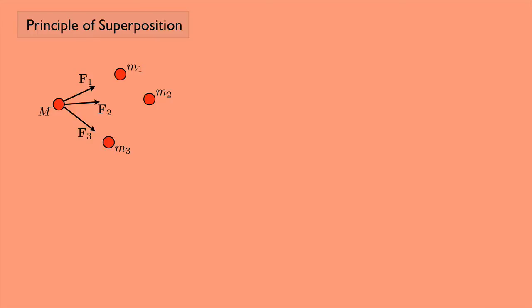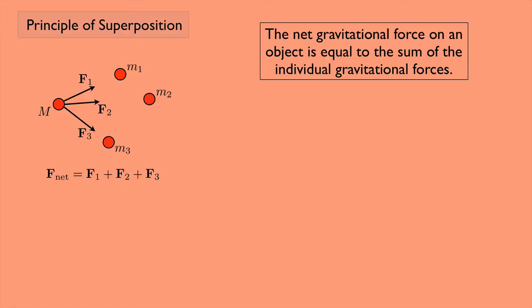Well, it turns out you just add them up. The net force — that's the sum of all the forces — is just F1 plus F2 plus F3. So the net gravitational force on an object is equal to the sum of the individual gravitational forces. That would mean F net equals F1 plus F2 plus F3, all the way up to Fn if we have n different objects. A cleaner way of writing this is to use summation notation: F net equals the sum from i equals 1 up to n of all the individual Fi's.